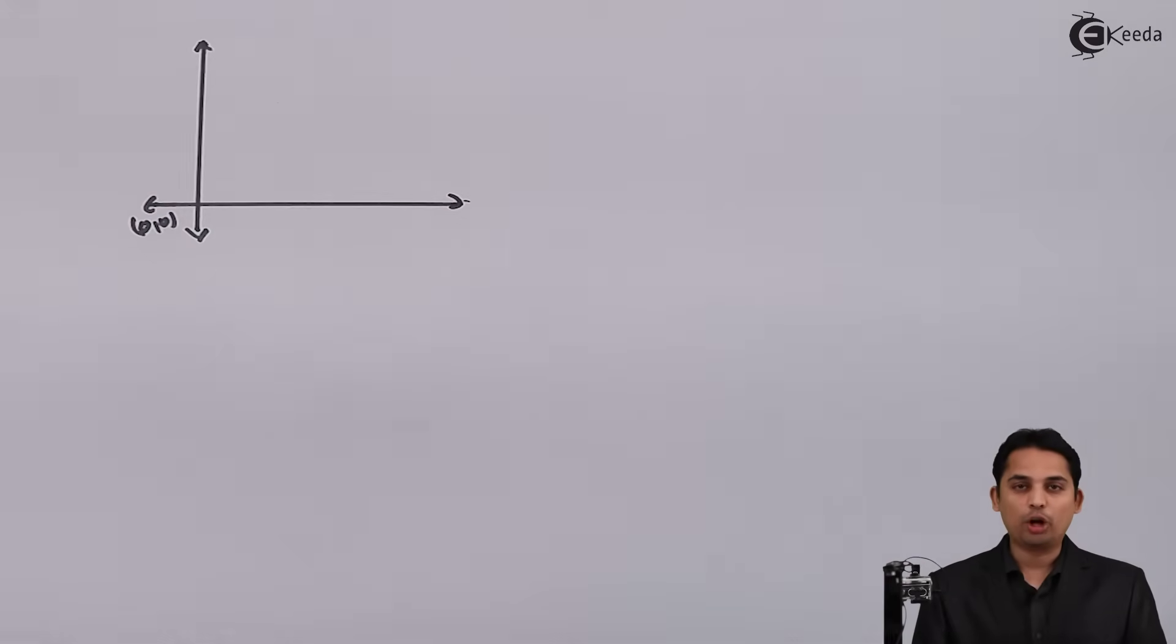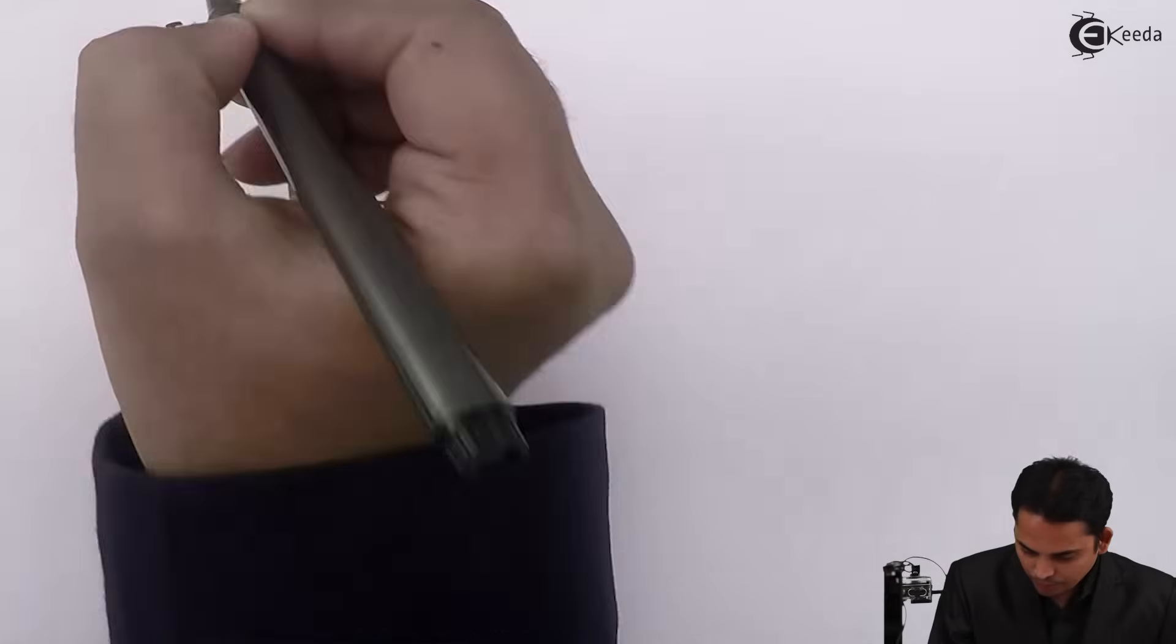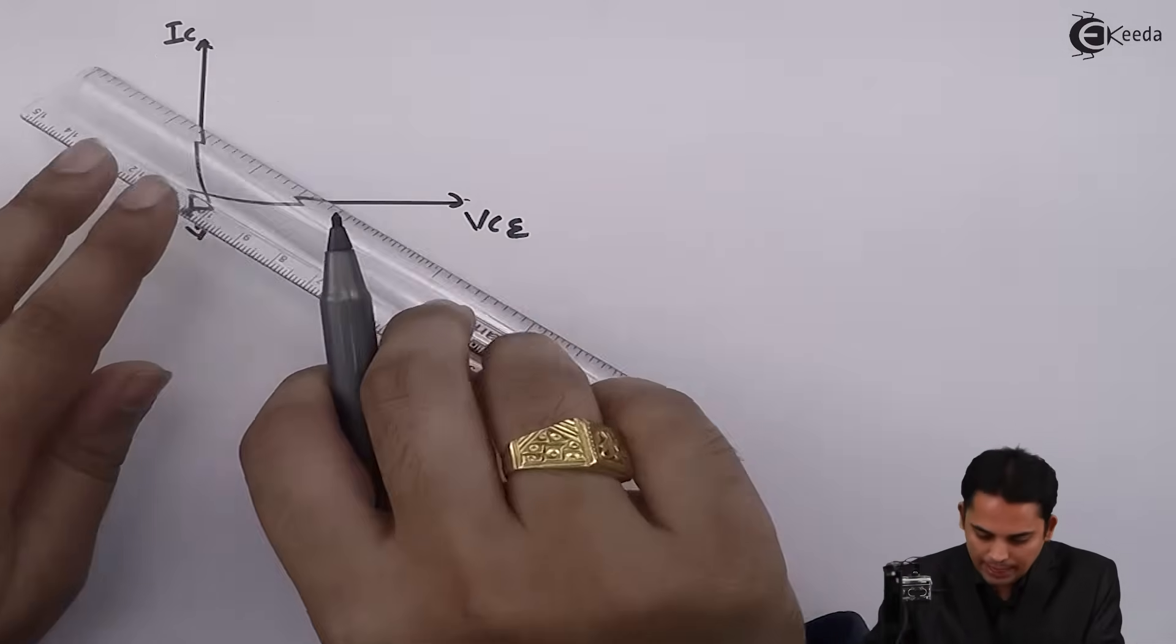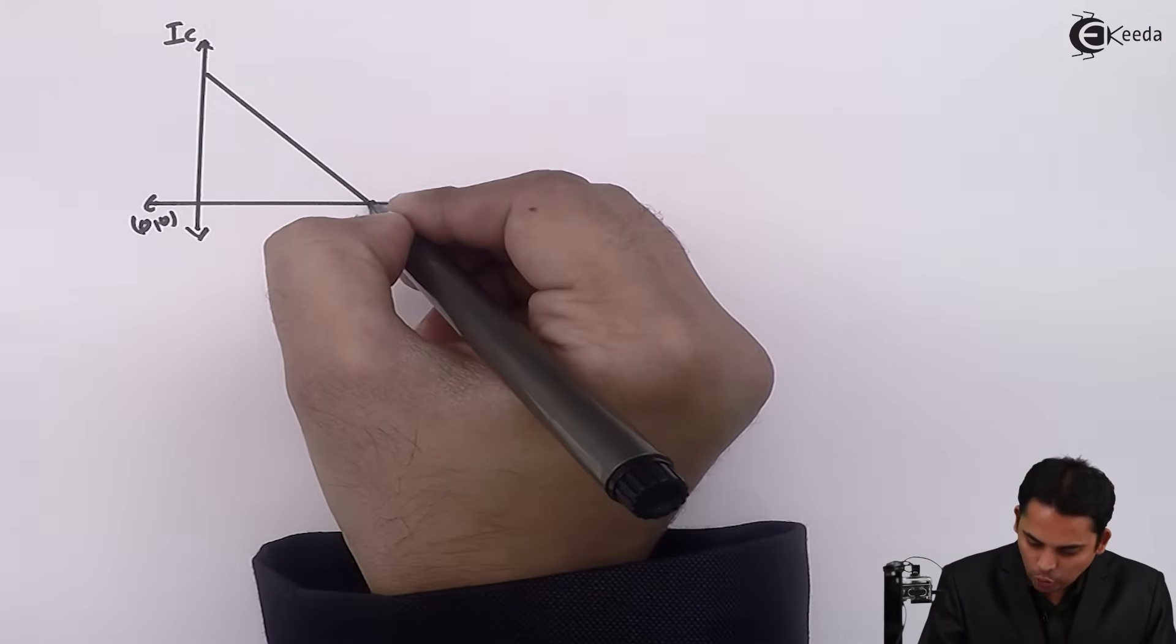So we will plot DC loadline for which point A and B we have already calculated. This is called IC and this is VCE. If we plot point A and B, we will get this as DC loadline.